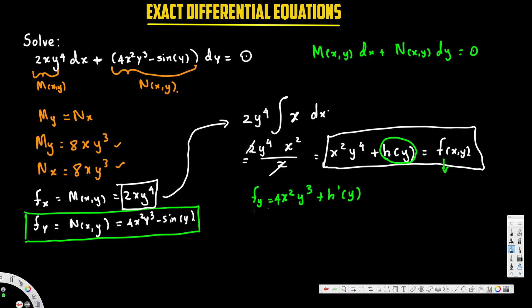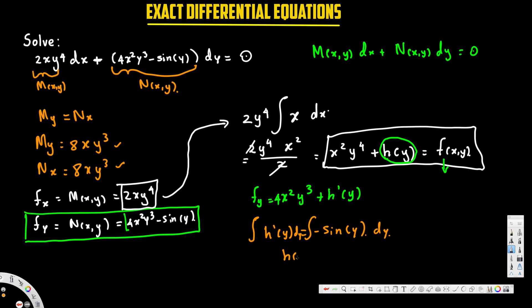Comparing this with N(x,y) = 4x²y³ − sin(y): the 4x²y³ terms match, and the only remaining piece is h′(y), which must equal −sin(y). To find h(y) we integrate both sides with respect to y. The left side becomes h(y), and integrating −sin(y) gives cos(y), since the double negative cancels. Adding a constant, h(y) = cos(y) + C.